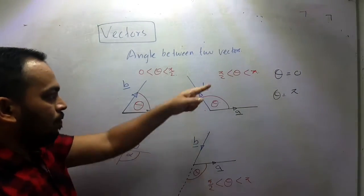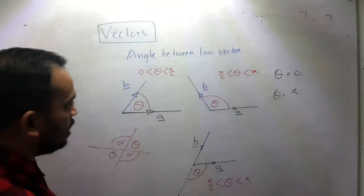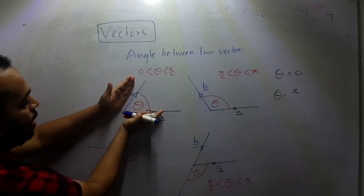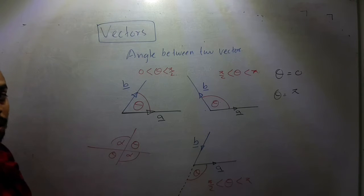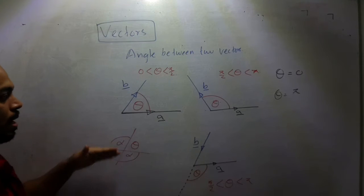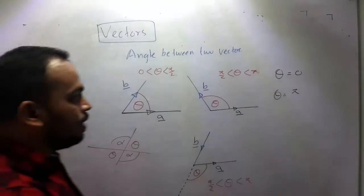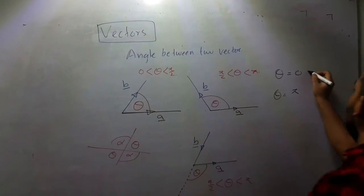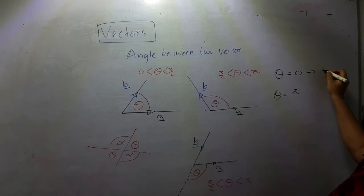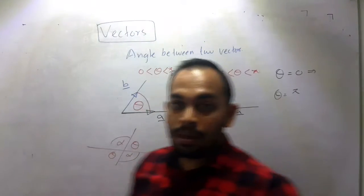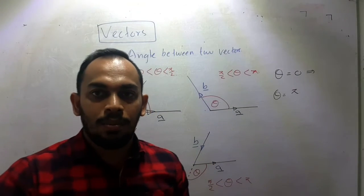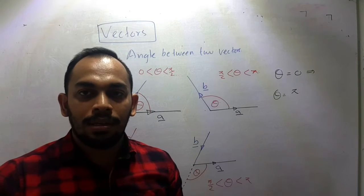Now, what if theta is 0? Theta 0 means the angle between these two vectors is null. No angle. No angle means what? They are parallel vectors. So in this case, both a and b are parallel vectors.